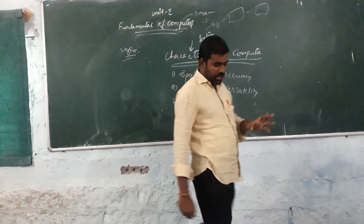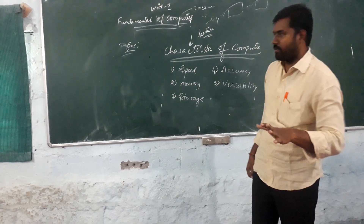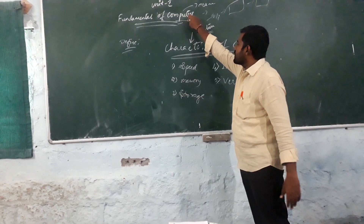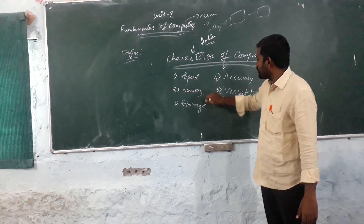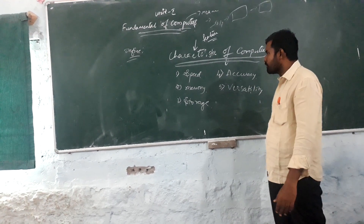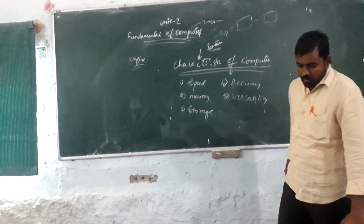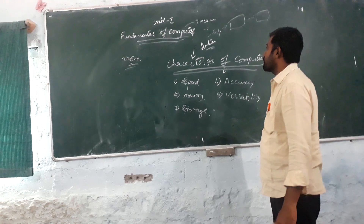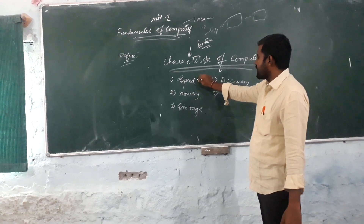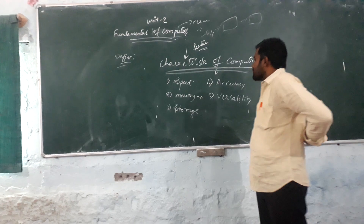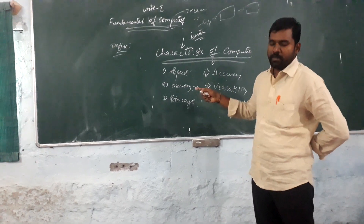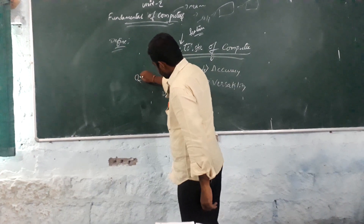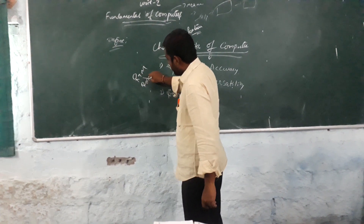The characteristics of computers are speed, memory, storage, accuracy, and versatility. Speed means how much time it takes to process the data taken as input from the user. Memory means the storage inside the computer system — memory includes RAM and ROM. RAM and ROM are the two types of memory.